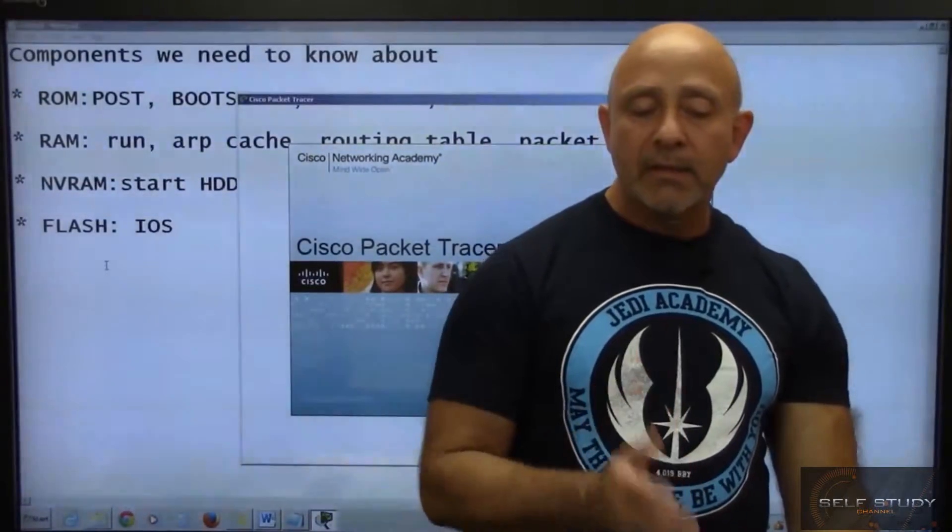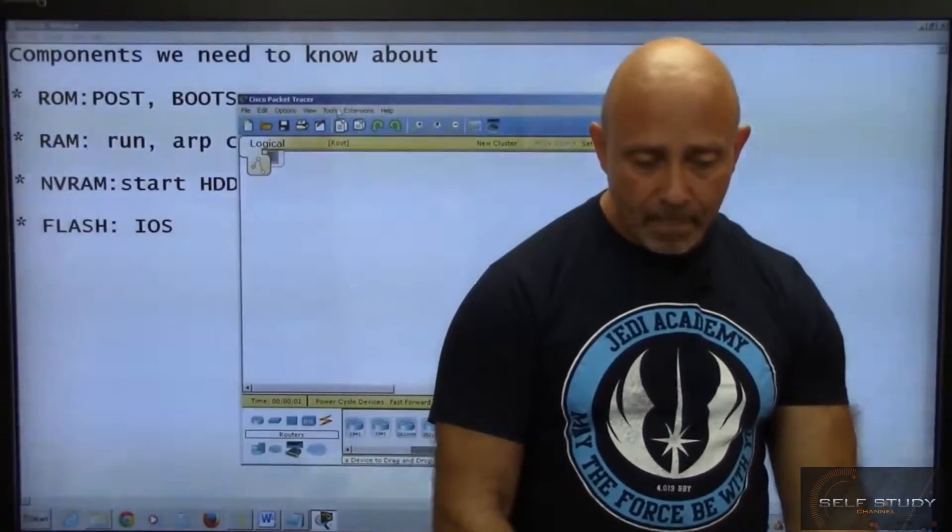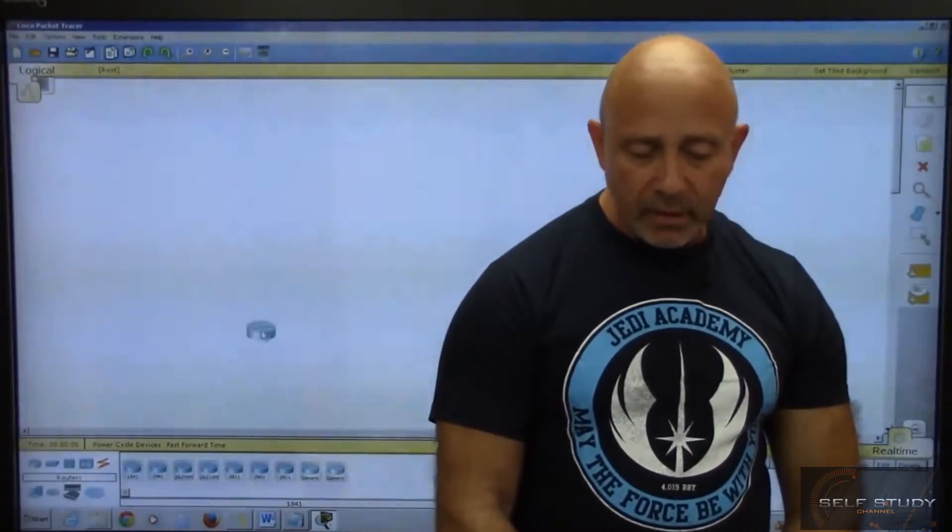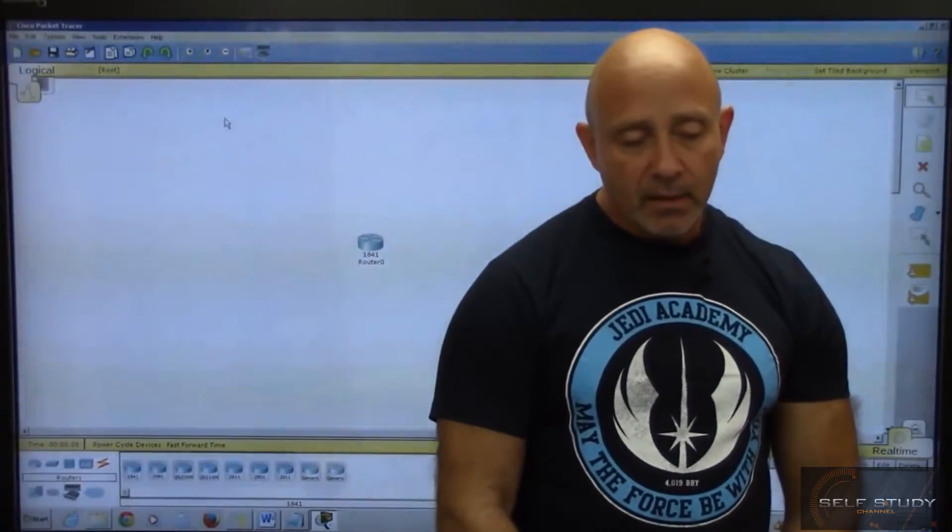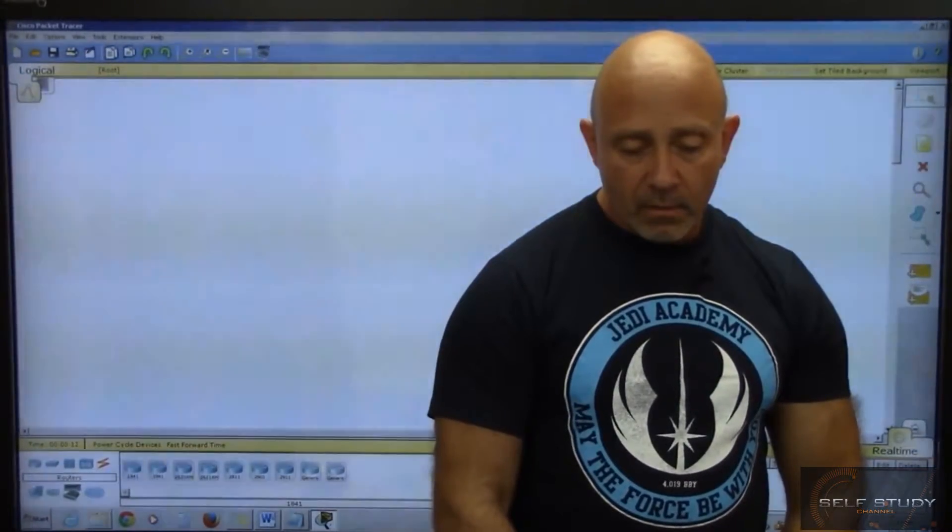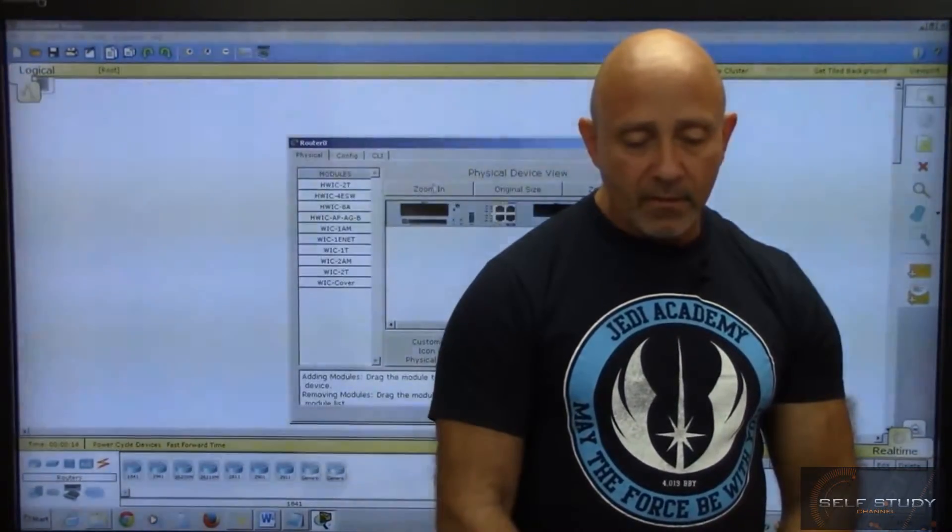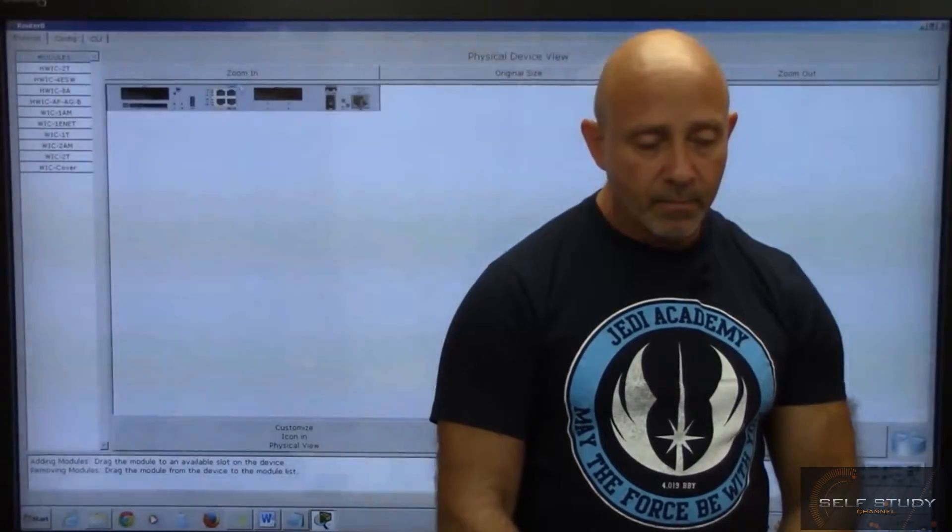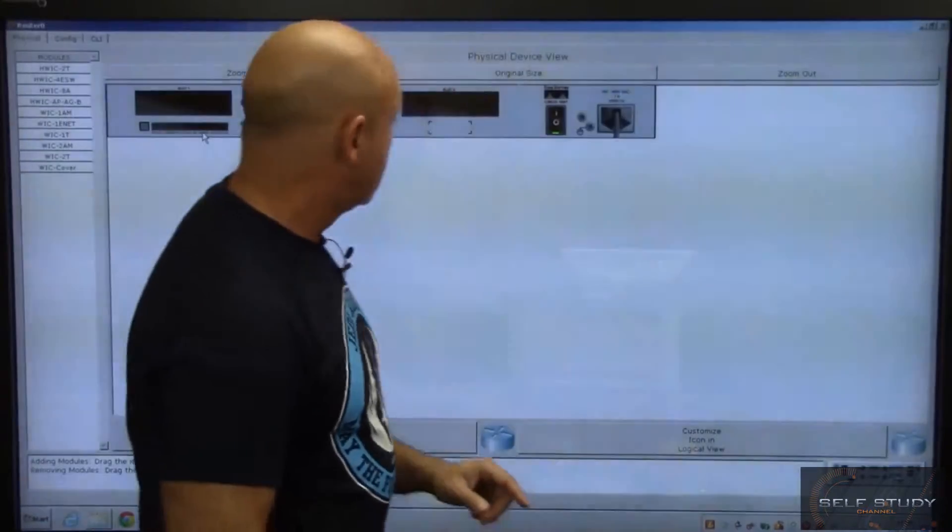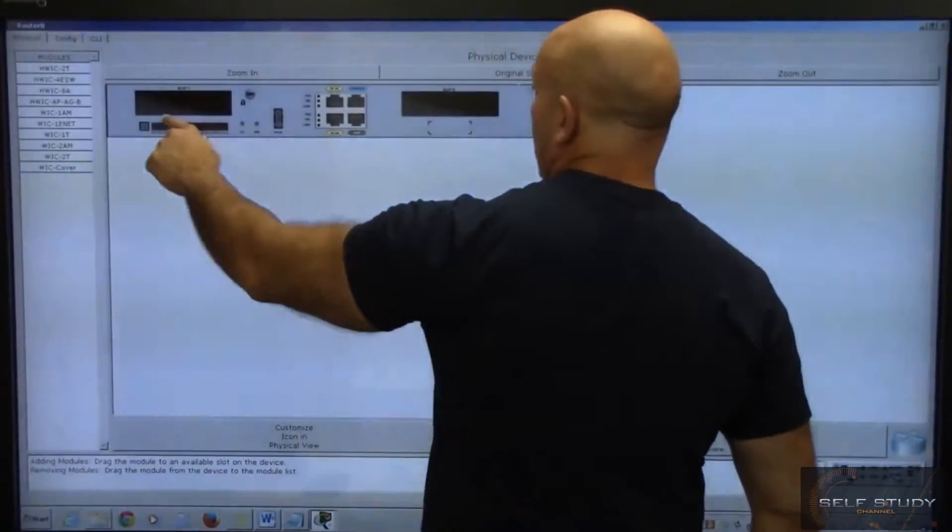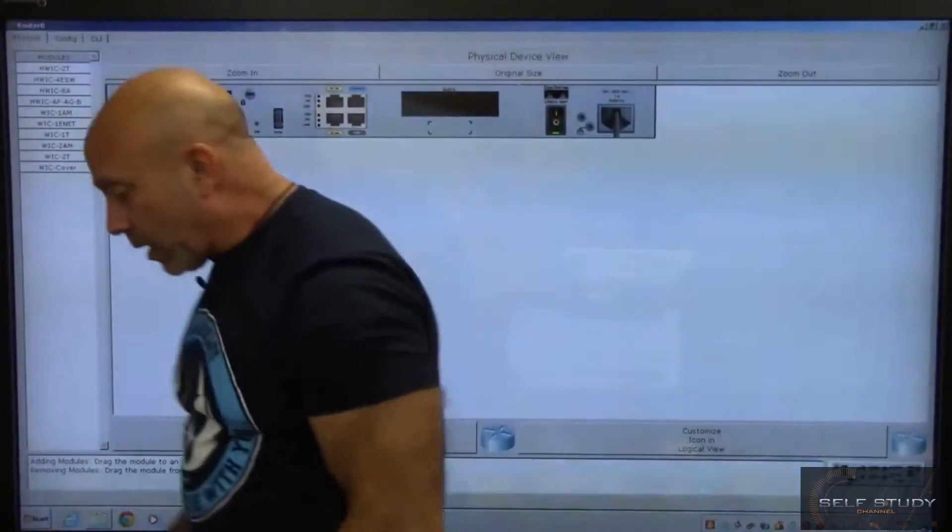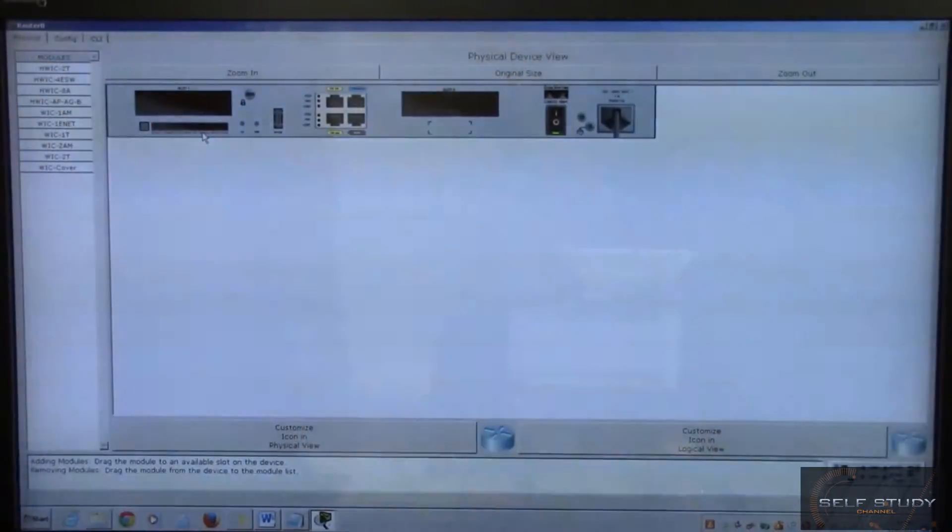I don't have the packet tracer open. Let's open it up real quick, because to look at these different things. Let's take out, I always use 1841s because that's the router that I have here in the classroom. The flash card goes right there. Where is it? Right there.